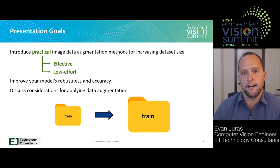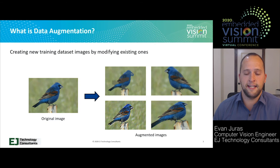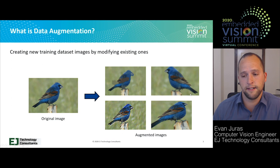So what is data augmentation? It's just creating new images for your training dataset by modifying existing ones. For example, I've got a picture of a blue grosbeak here and I've augmented it into four different images. The examples I've got for augmentation methods are pixel clustering, embossing, perspective transform, flipping, cropping, and blurring.